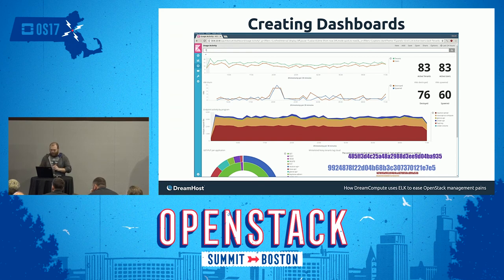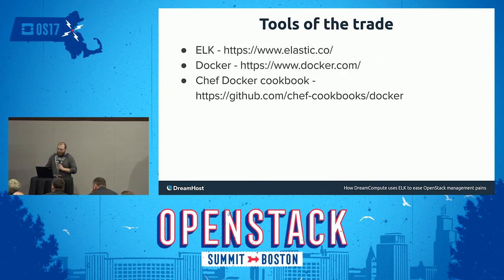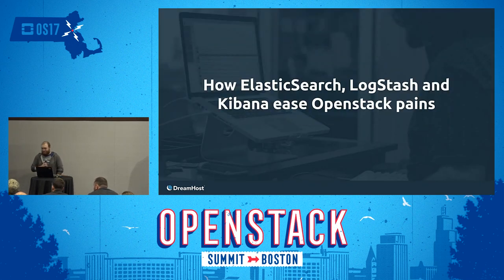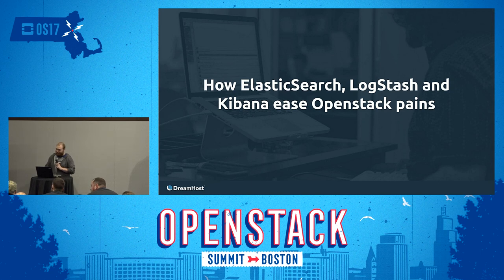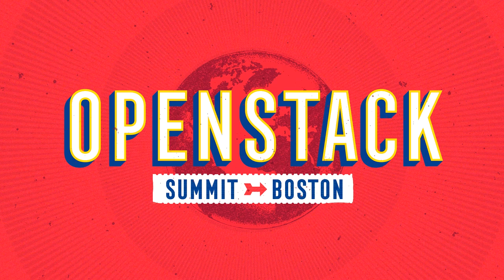The tools we used here: obviously ELK, Docker — which has been amazing to make the deployment super simple — and the Docker Chef cookbook. [Question]: How do you ship the logs to ELK? We use rsyslog on the clients to ship to a centralized rsyslog server, and then the rsyslog server sends it to the Logstash container. [Question]: Is there any reason you couldn't use file-based shipping? I wouldn't say there's no reason; we just didn't choose to do that. It's something we can certainly look into. Thank you very much.